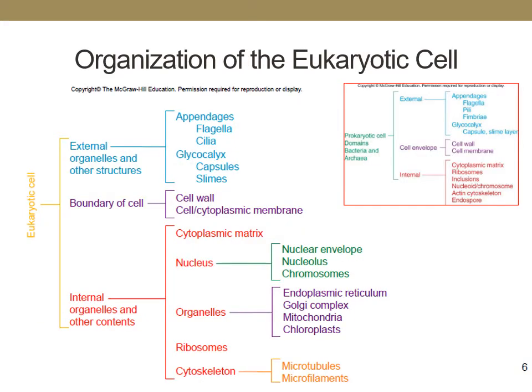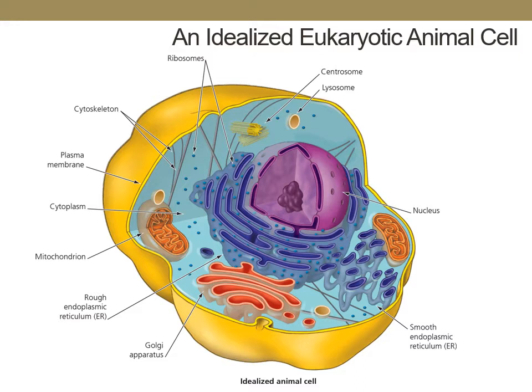The eukaryotic cell is organized much like the prokaryotic cell. Both cell types have external appendages and the ability to produce a glycocalyx. Some eukaryotic cells have a cell wall, but it is composed of different material than the prokaryotic cell wall, and you should know the difference. The internal structures are more extensive and complex in the eukaryotic cell. This is a composite eukaryotic cell, which means all of the structures you can find in a eukaryotic cell are included here, but depending on the type of cell, you may not find all of these structures.